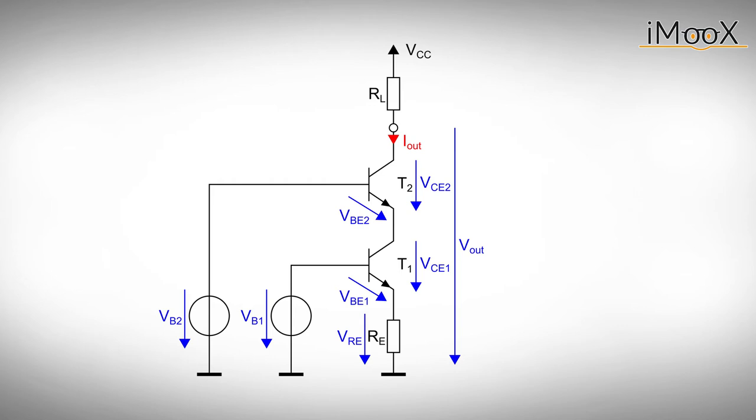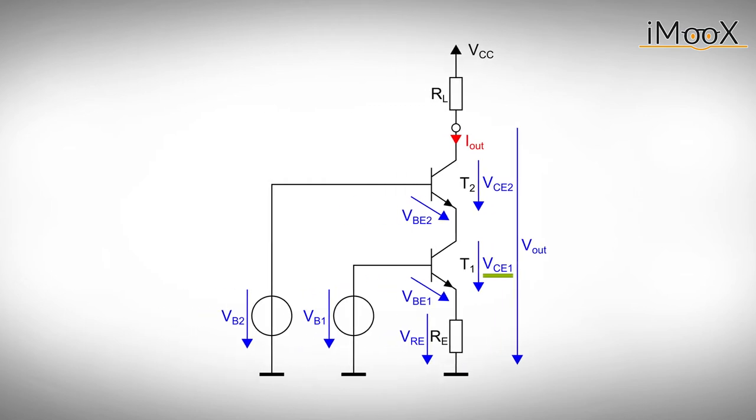Any change in output voltage changes the collector emitter voltage of the second transistor T2. The collector emitter voltage of the current controlling transistor T1 is pinned to VCE1 equals VB2 minus VBE2 minus VRE. The second base voltage VB2 is selected in such a way that the lower transistor T1 operates in the active regime, just like it did in our previous circuit.